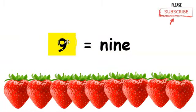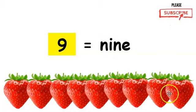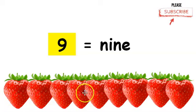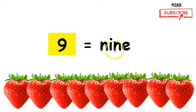This is the number nine. This is how you write the word nine. We should have nine strawberries below. Let's count. One, two, three, four, five, six, seven, eight, nine. Nine.